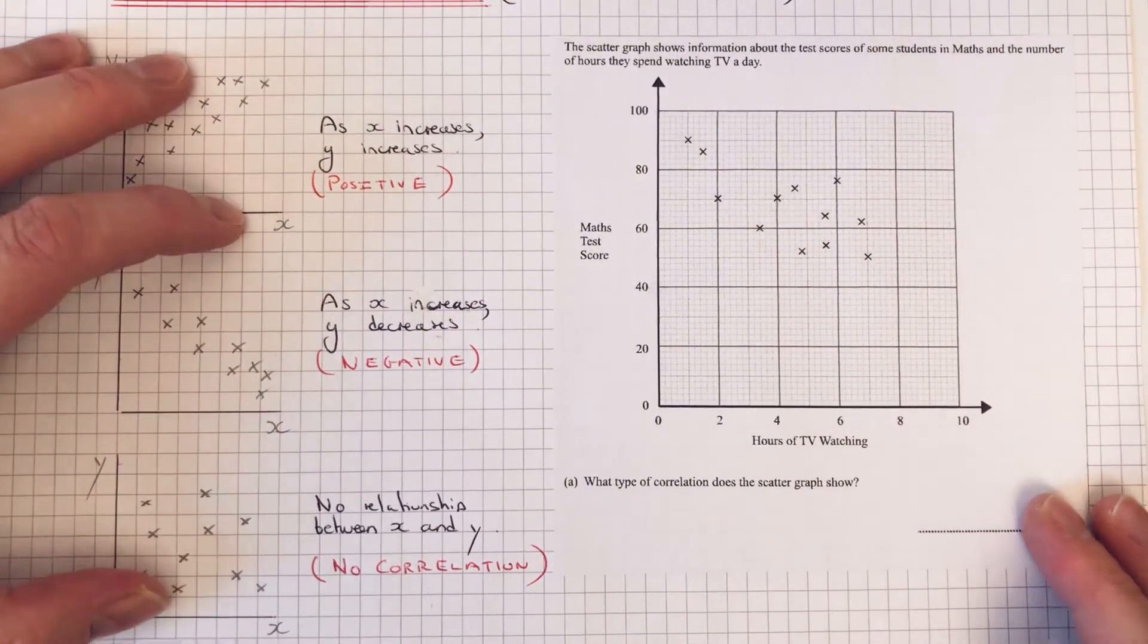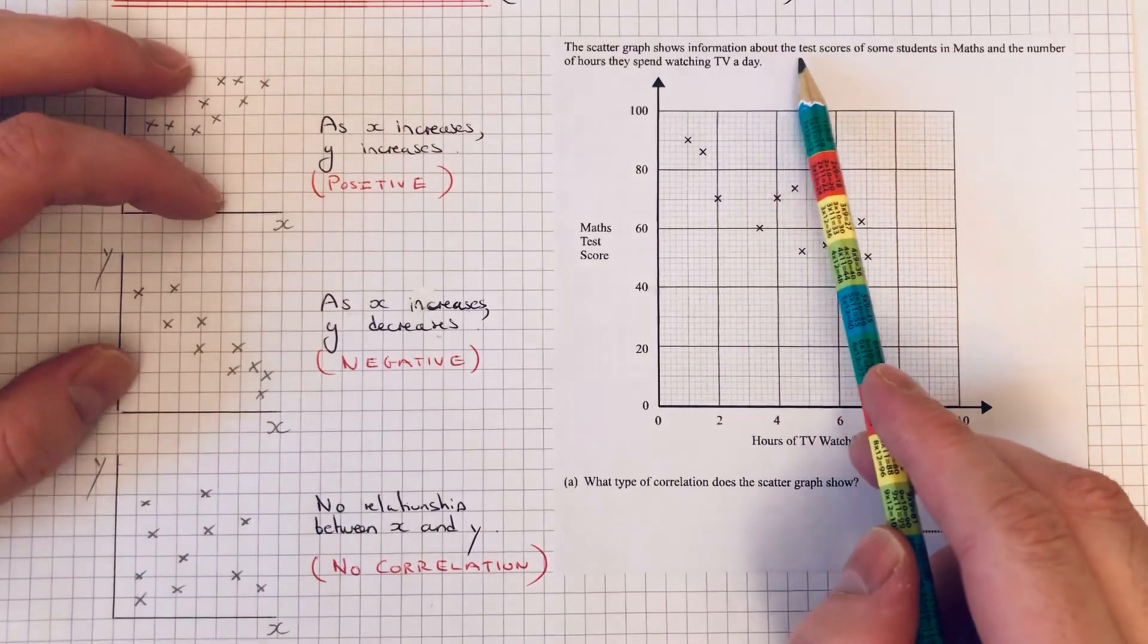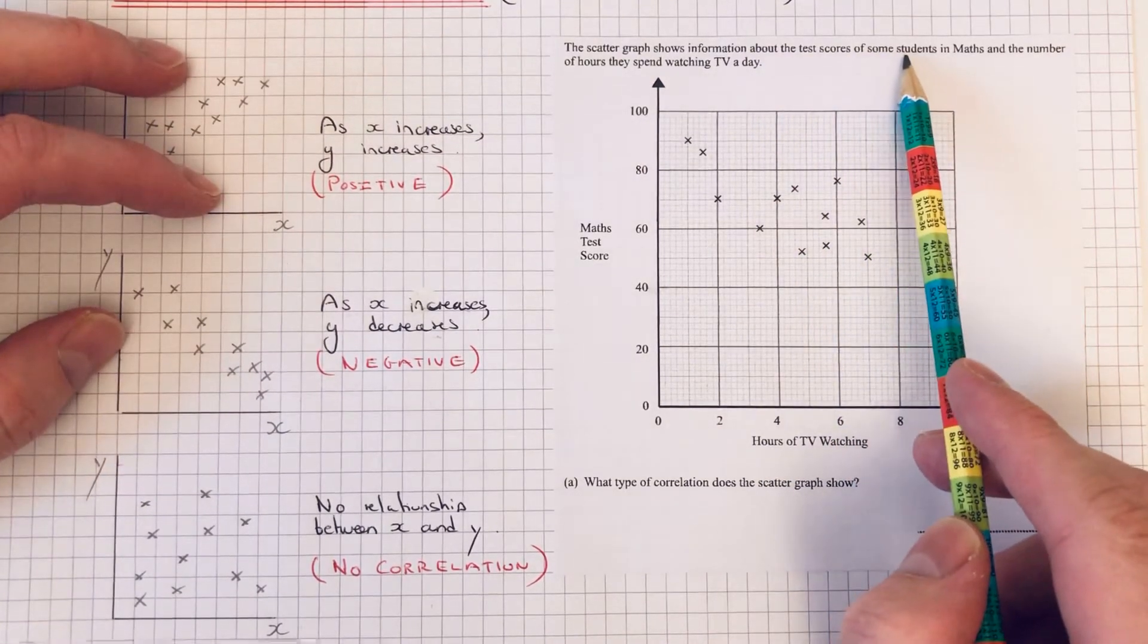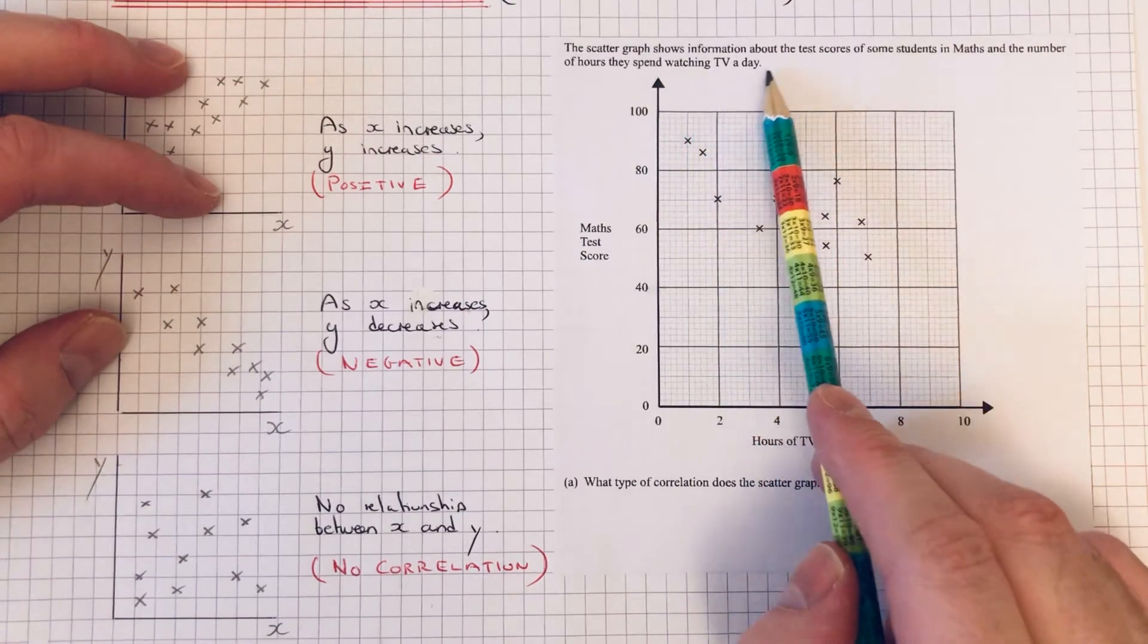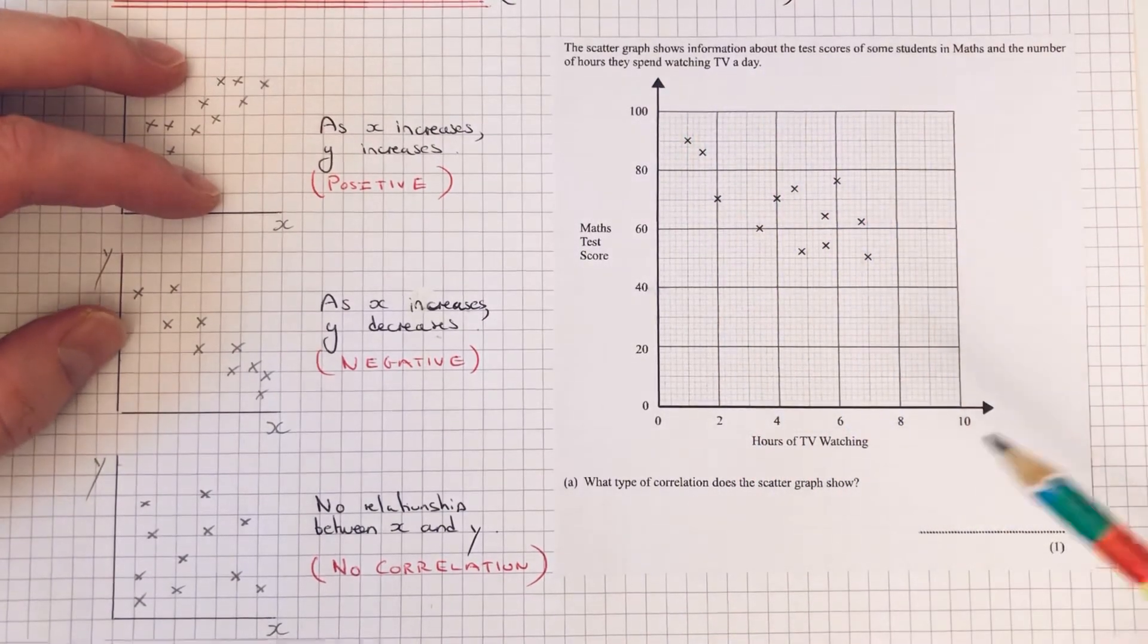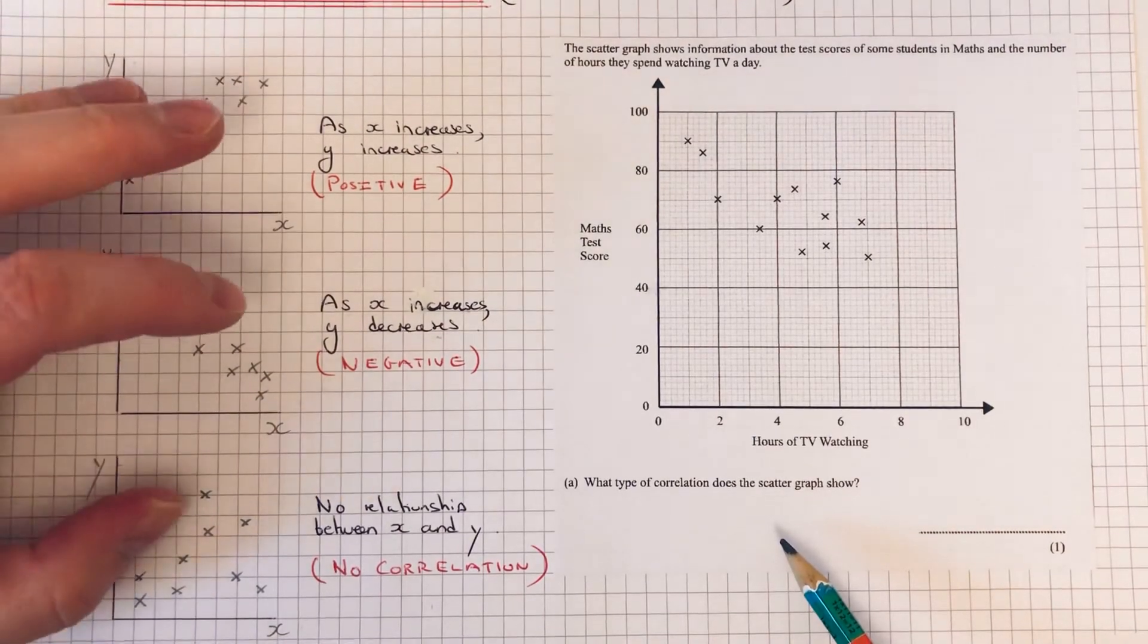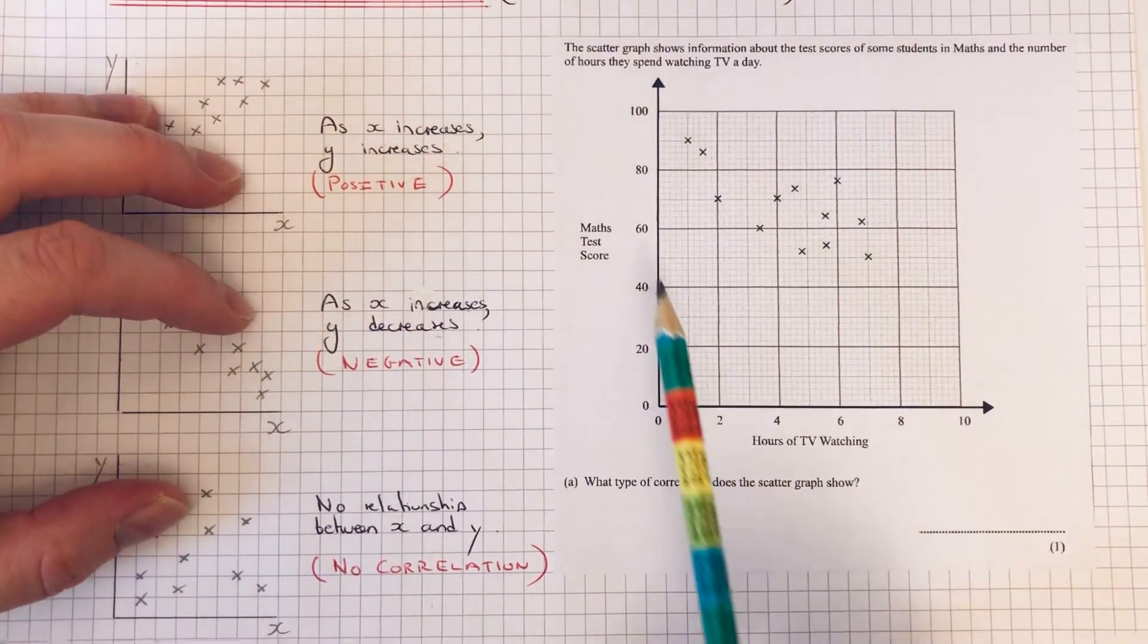The scatter graph shows information about the test scores of some students in maths and the number of hours they spent watching TV a day. What type of correlation does the scatter graph show? As you can see, the points are going downwards from left to right across the page.